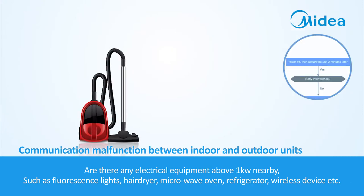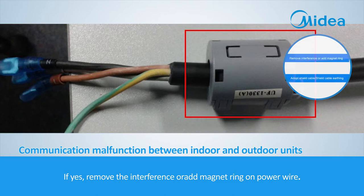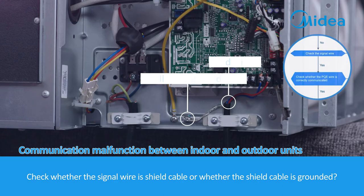Check whether there are any electrical equipment above one kilowatt nearby, such as fluorescence lights, hair dryer, microwave oven, refrigerator, wireless devices, etc. If yes, remove the interference or add a magnet ring on the power wire.